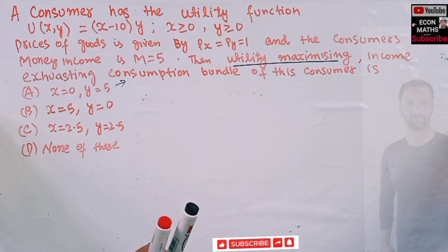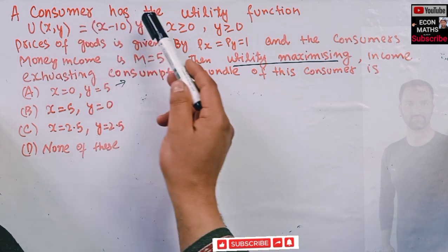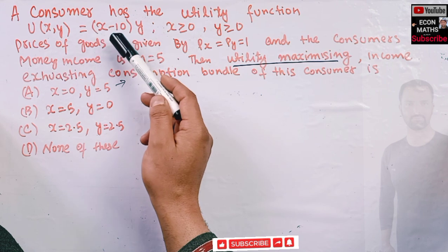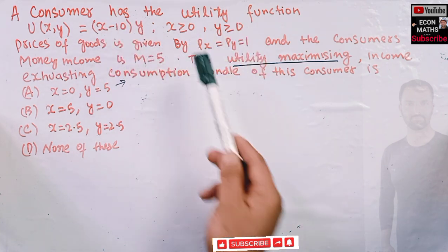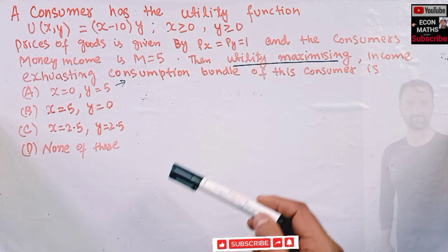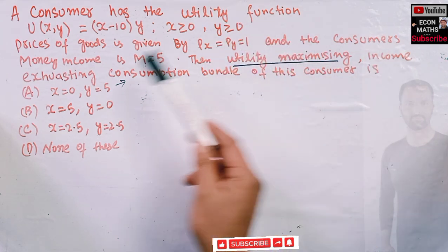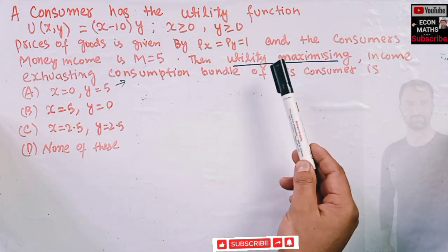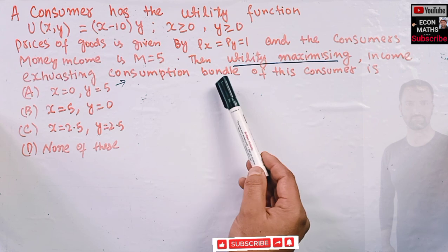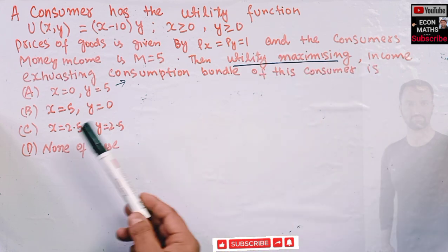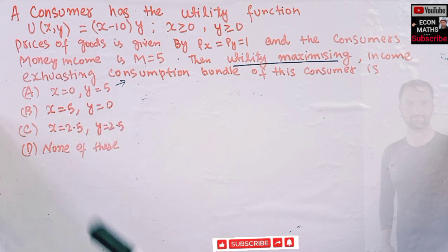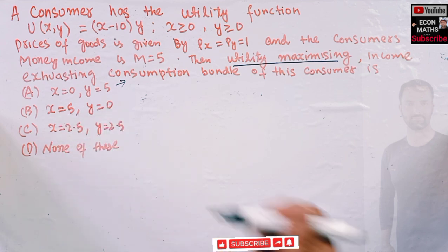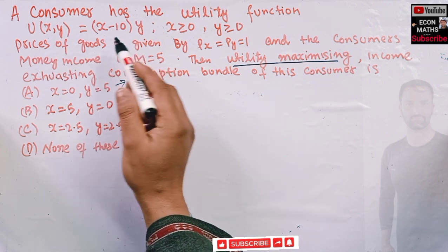In this video we will try to solve a question asked by a brother on the Econ Methods Telegram channel. The question is: a consumer has the utility function U(x,y) = (x minus 10) times y, with x greater than zero and y greater than zero. The price of both goods is equal to one, and the consumer's money income is five. We want to find the utility-maximizing, income-exhausting consumption bundle.